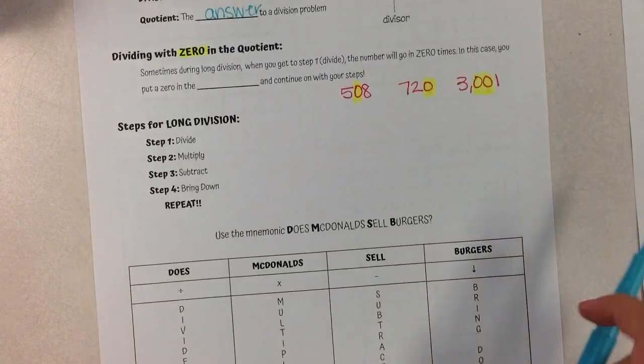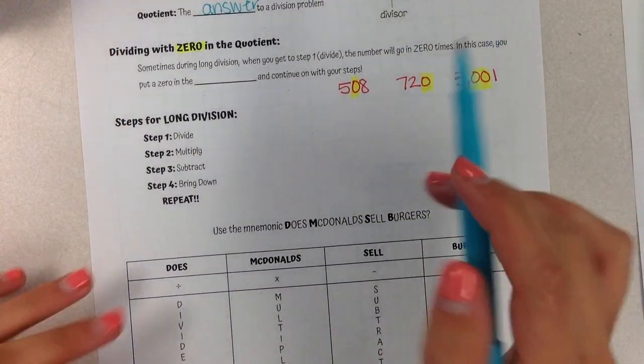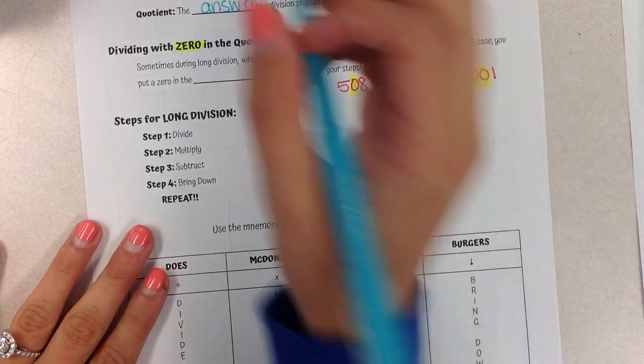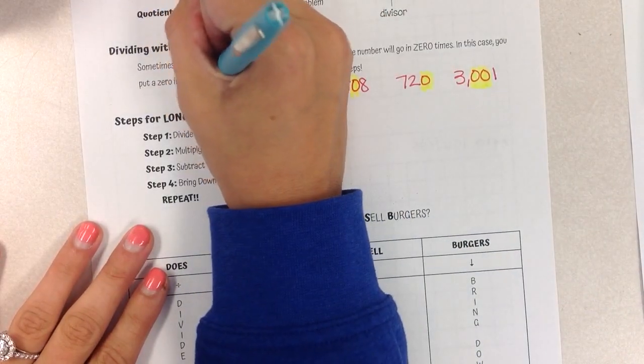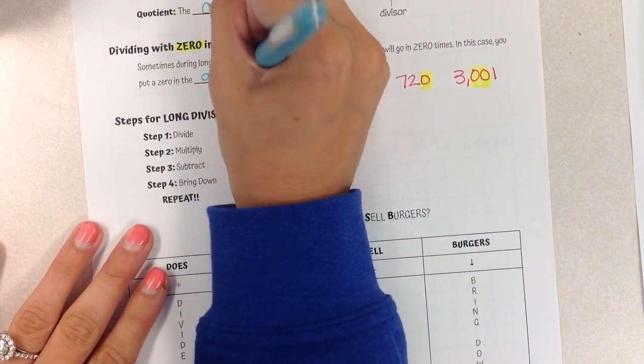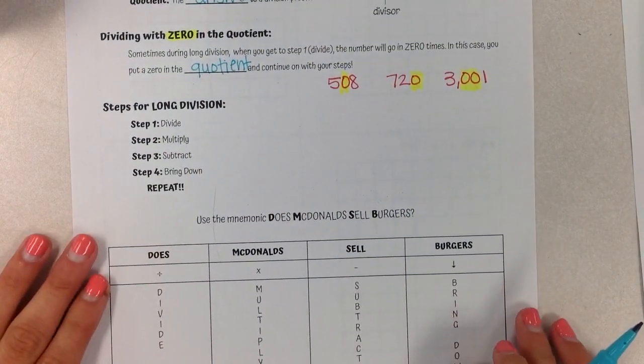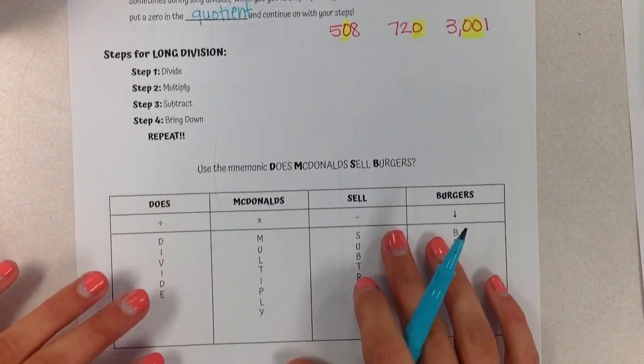So sometimes during long division, when you get to step 1, the number will go in zero times. In this case, you put a zero in the quotient. It doesn't mean it goes in zero times, it doesn't matter. It has to go in the quotient there, and then continue on with your steps.